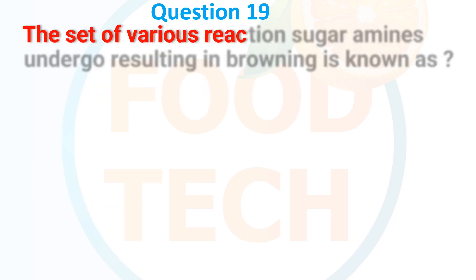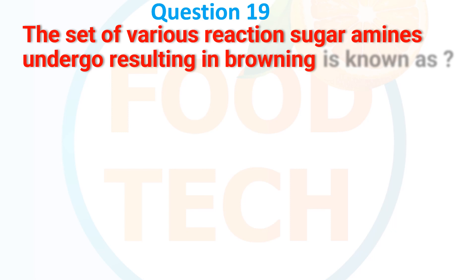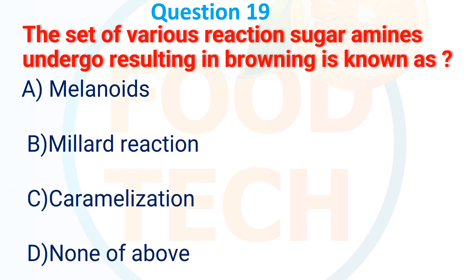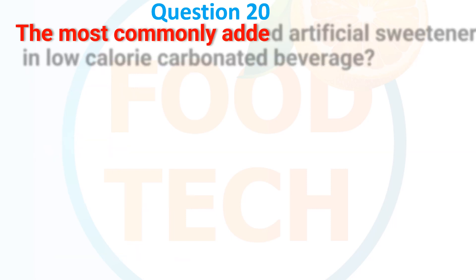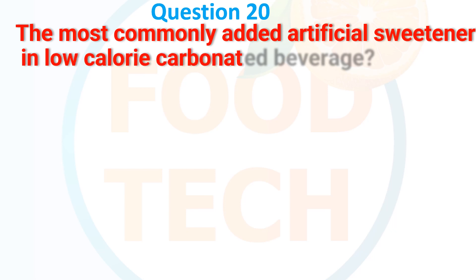Question 19: The set of various reactions that sugar and amines undergo, resulting in browning, is known as — A. Melanoidins, B. Maillard reaction, C. Caramelisation, D. None of the above. The answer is B. Maillard reaction.